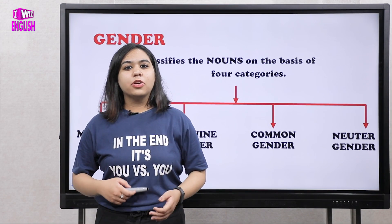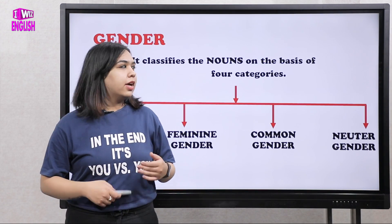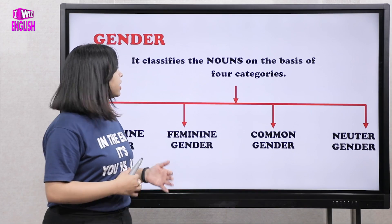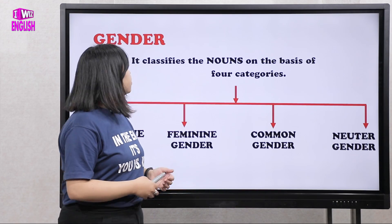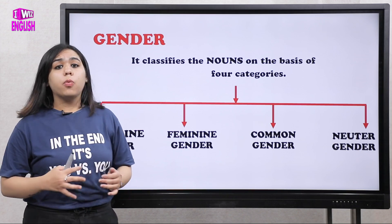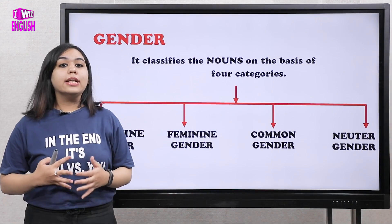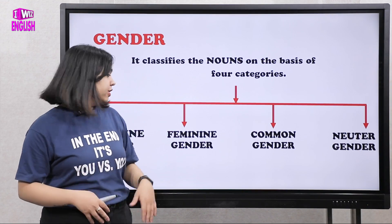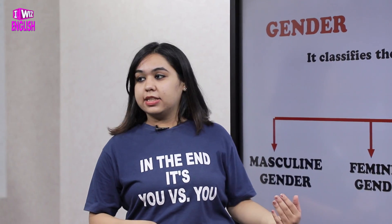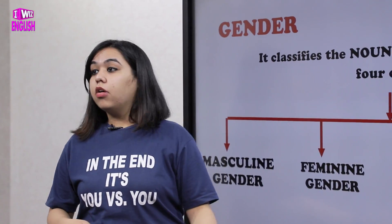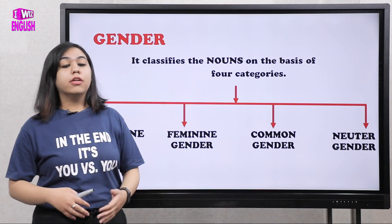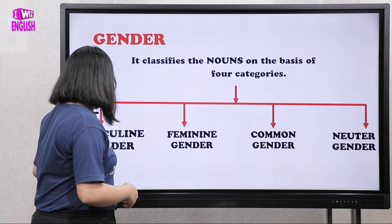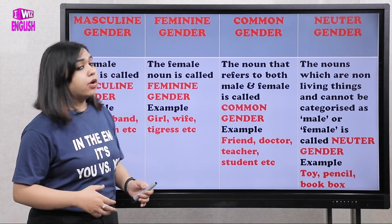Now we start our next topic — gender. We've discussed number; now we move to gender. Gender is classified into four categories: masculine gender, feminine gender, common gender, and neuter gender.